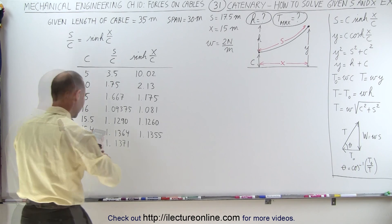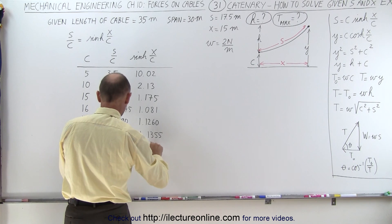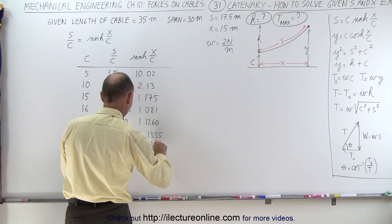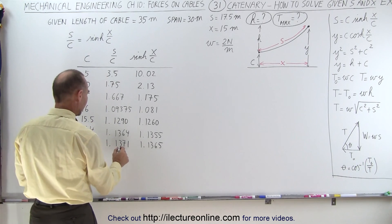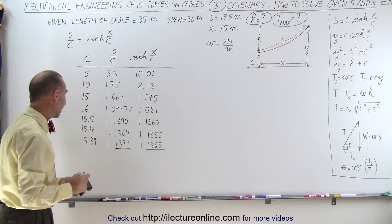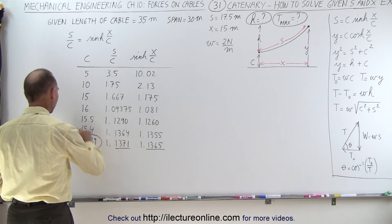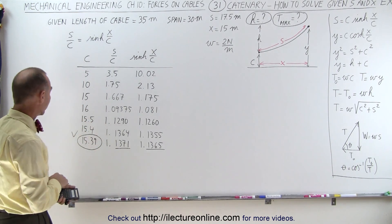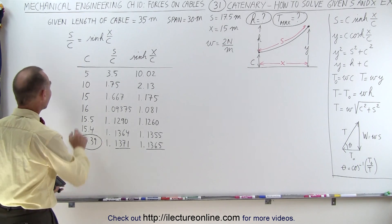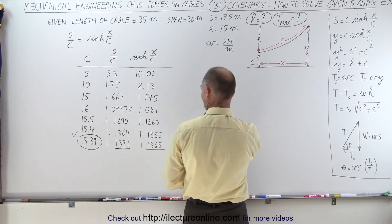So maybe my next try should be 15.39. Hopefully that'll get us where we need to go. 17.5 divided by 15.39 and we get 1.1365. We're getting really close. You know what? I'll call this close enough. We are there. We have C equals 15.39, which will now allow us to solve for Y and H.